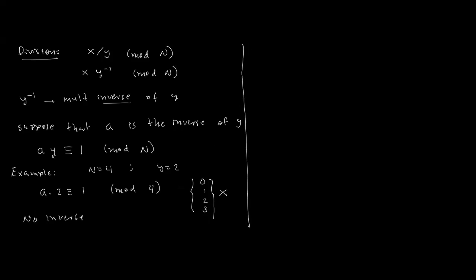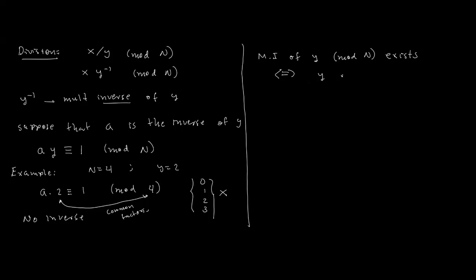The reason we don't have an inverse is that 4 and 2 have common factors. The multiplicative inverse of y mod n exists if and only if y and n have no common factors, meaning GCD(y, n) equals 1.